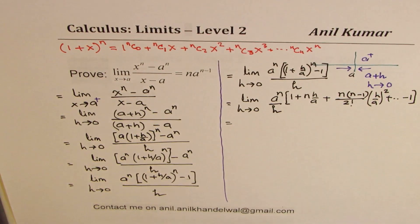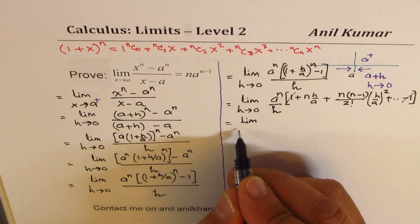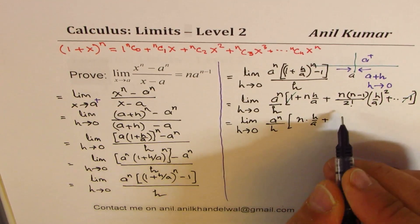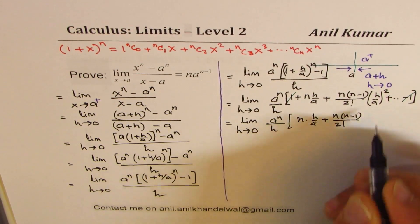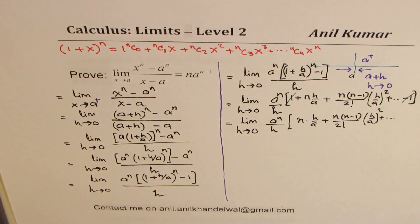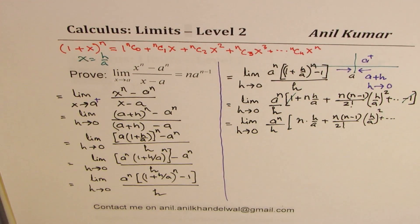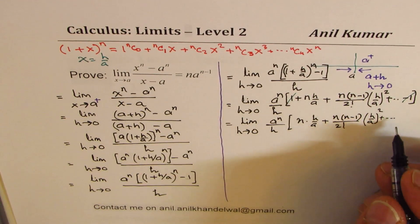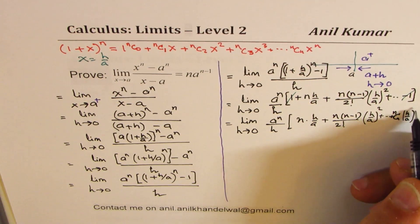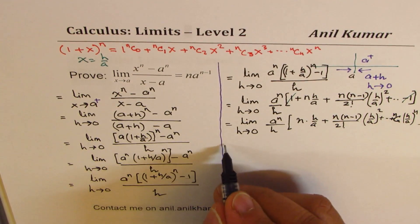The 1 cancels with the minus 1, giving us limit h approaches 0 of a to the power of n over h, times [n times h/a plus n(n−1)/2! times (h/a) squared, plus further terms up to (h/a) to the power of n]. Since h is a common factor in all these terms, we factor it out.